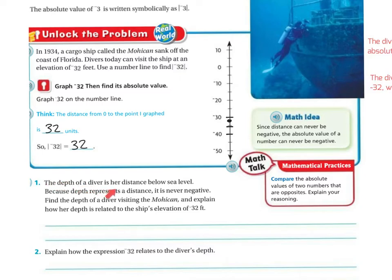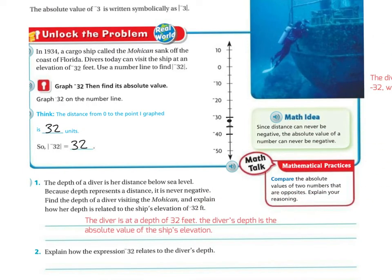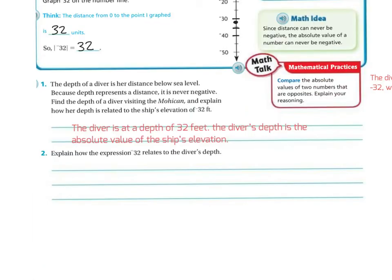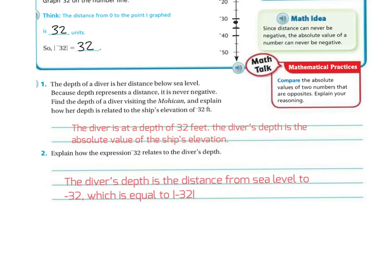The depth of a diver is her distance below sea level. Because depth represents a distance, it is never a negative number. Find the depth of the diver visiting the Mohican and explain how her depth is related to the ship's elevation of negative 32 feet. The diver is at a depth of 32 feet. The diver's depth is the absolute value of the ship's elevation. The diver's depth is the distance from sea level to negative 32, which equals the absolute value of 32.